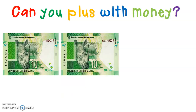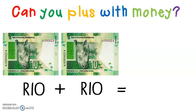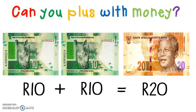A 10 Rand note and a 10 Rand note — now we are adding notes. So we are going to say 10 Rand plus 10 Rand equals 20 Rand. And what does a 20 Rand look like? There we go. So that means if I had to break up a 20 Rand, I could break it up into a 10 Rand and a 10 Rand — 2 10 Rands make a 20 Rand.